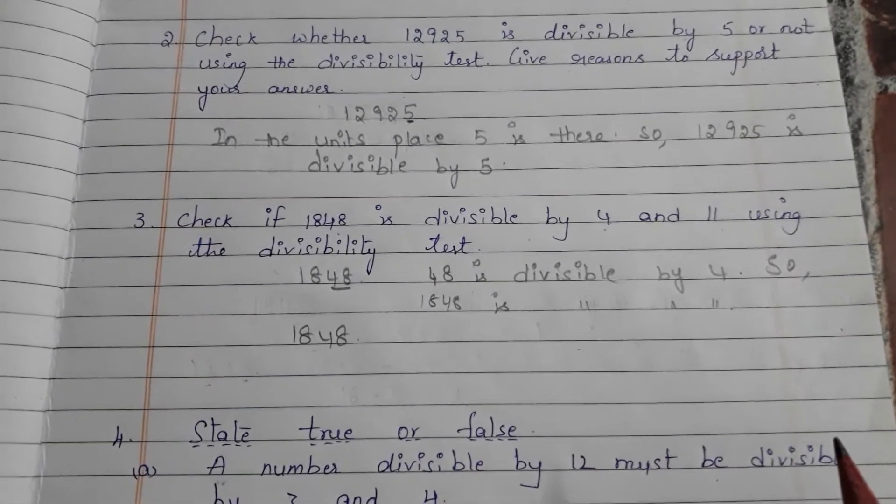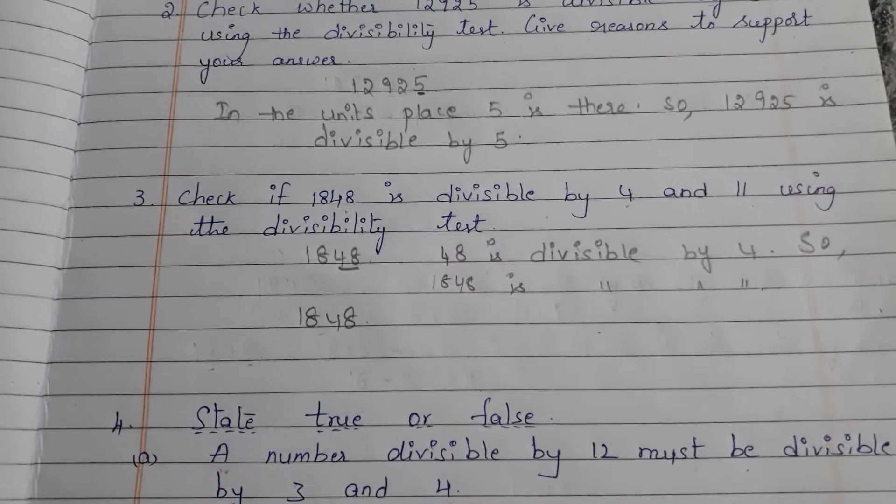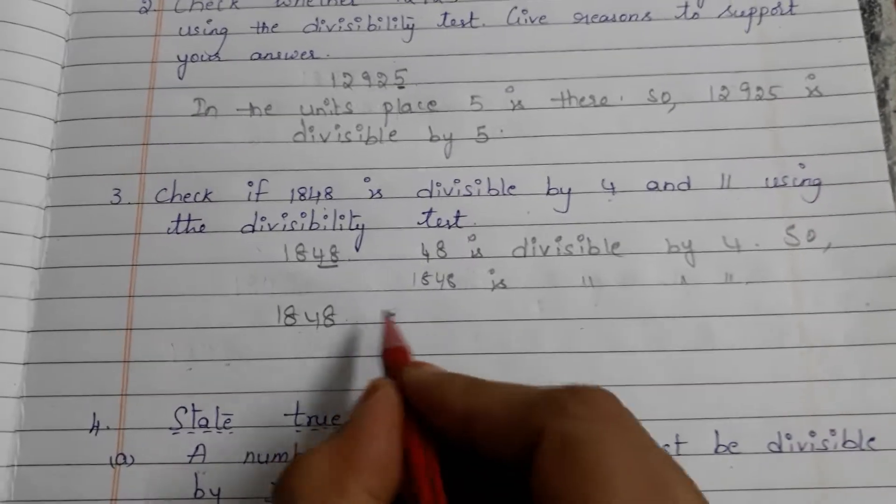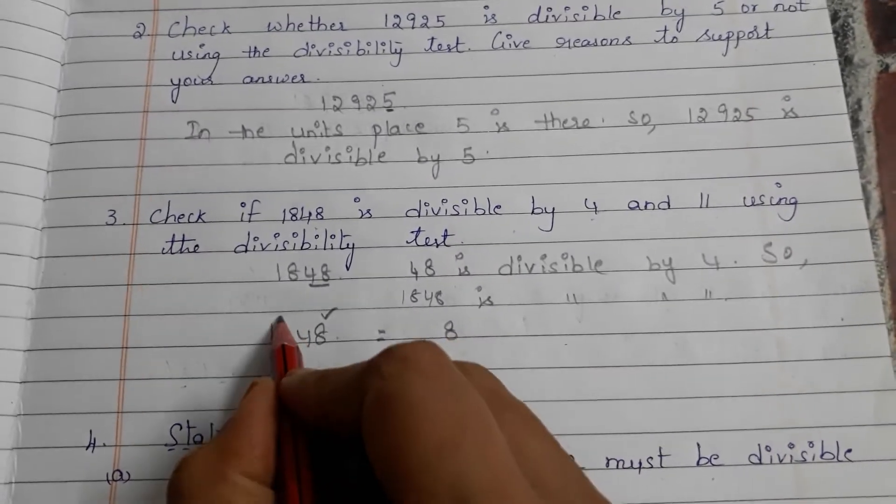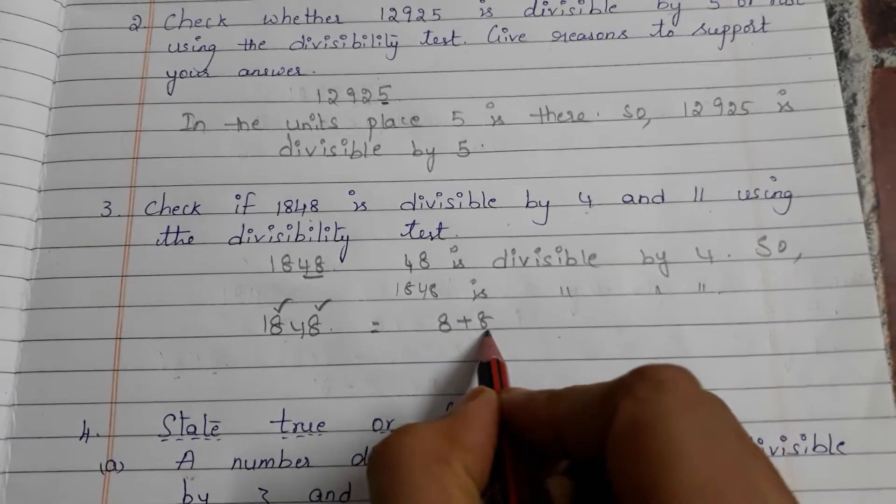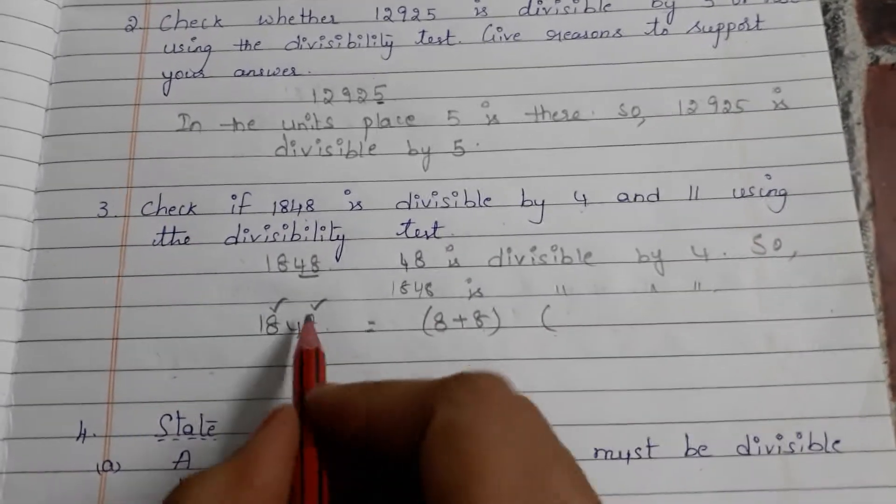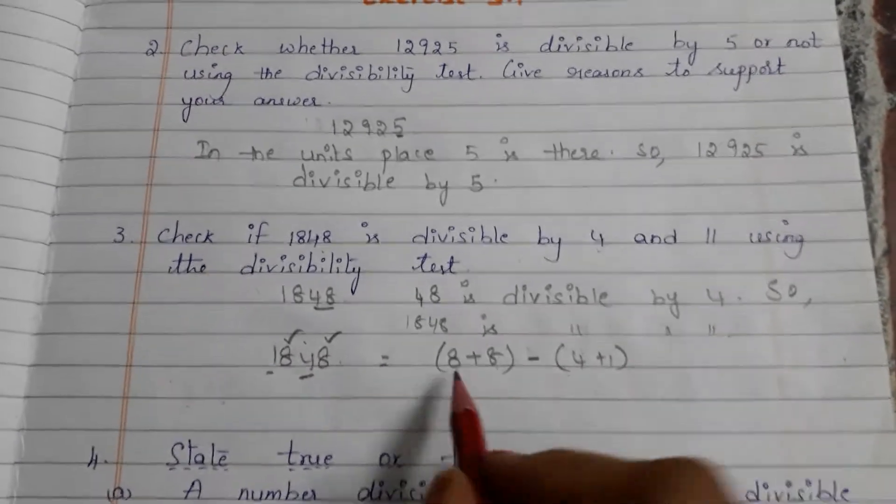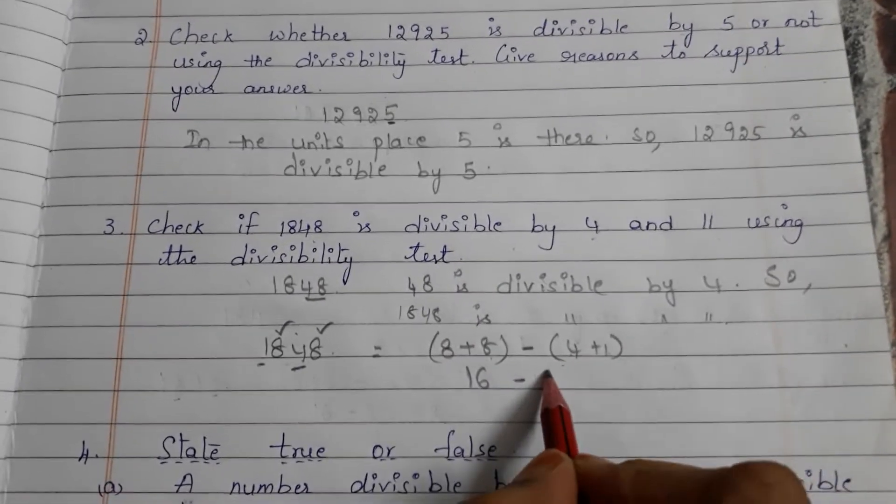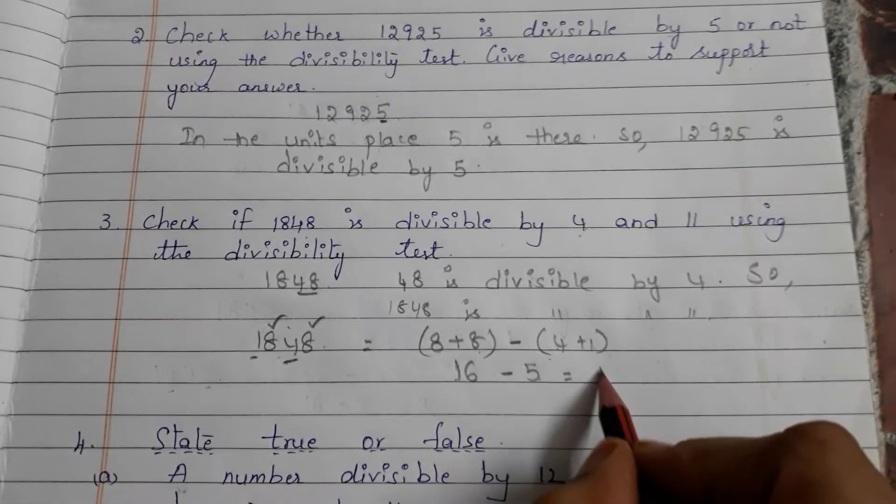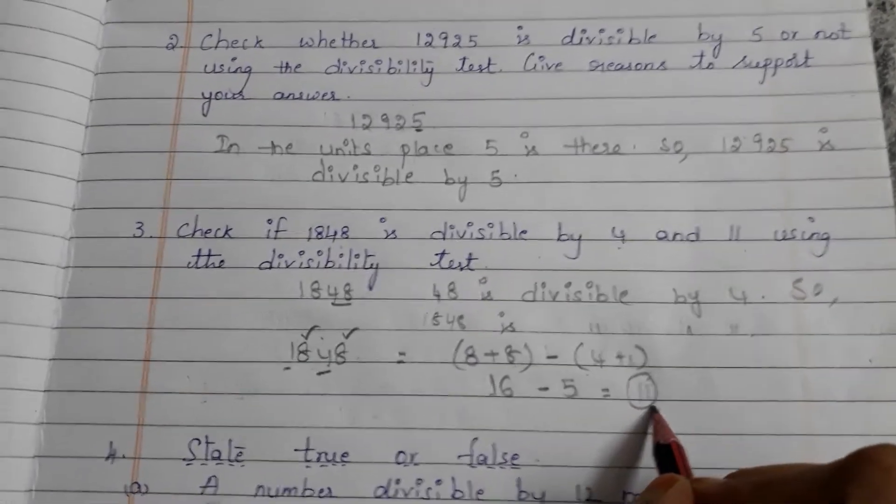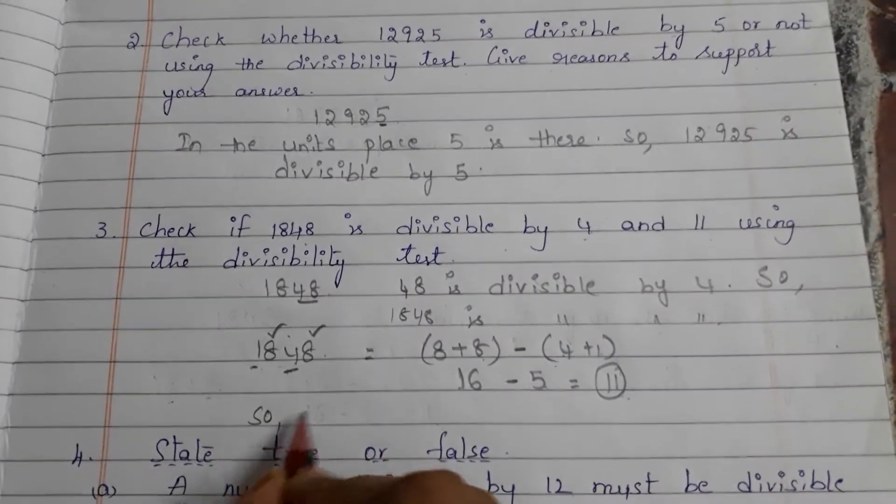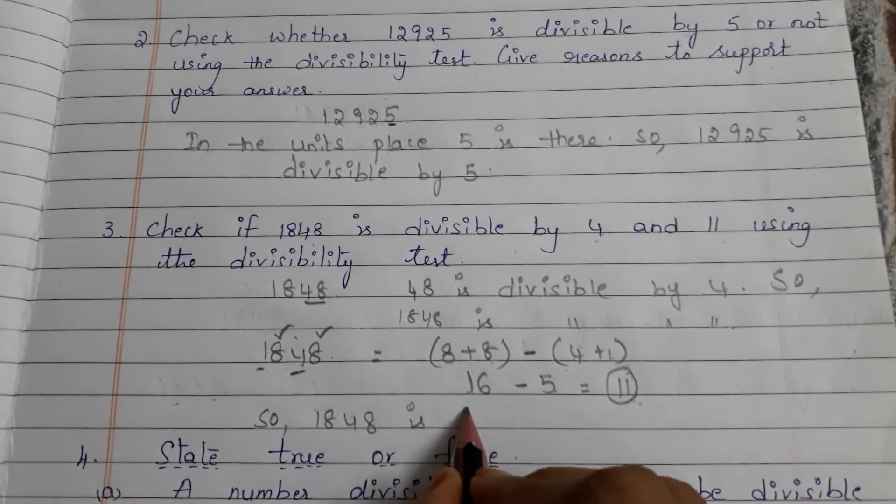Let us take 1848 again. Now we check for 11. What is the divisibility rule for 11? The difference of sums of alternate digits should be either 0 or 11. Take the alternate digits: 8 and 8, sum them. Another set: 4 and 1. Take the difference: 8 plus 8 is 16, minus 4 plus 1 is 5. 16 minus 5 is 11. We got 11, so 1848 is divisible by 11.